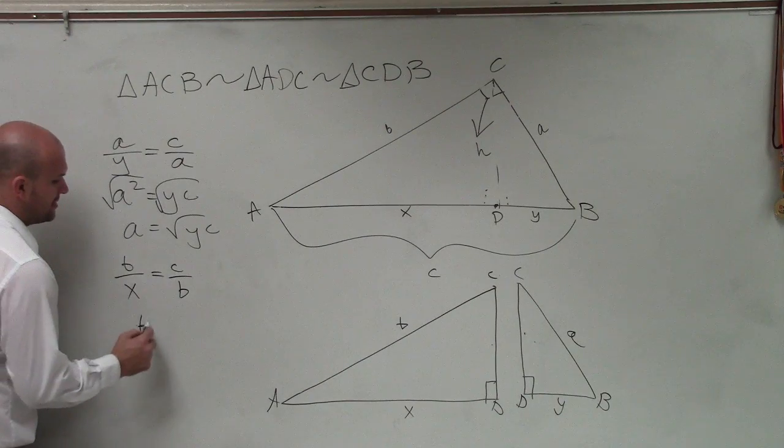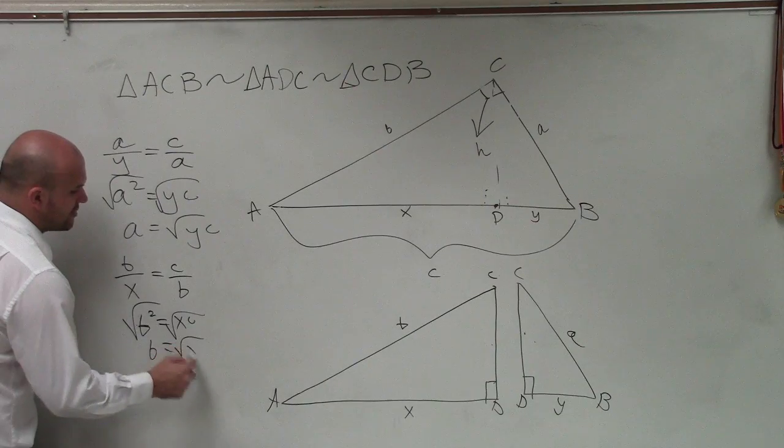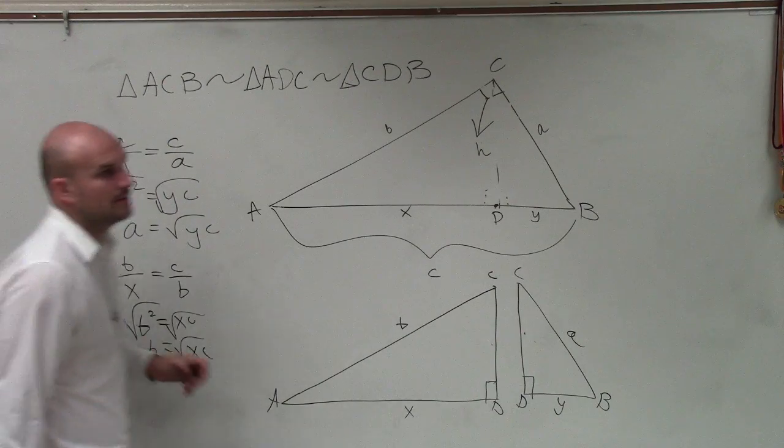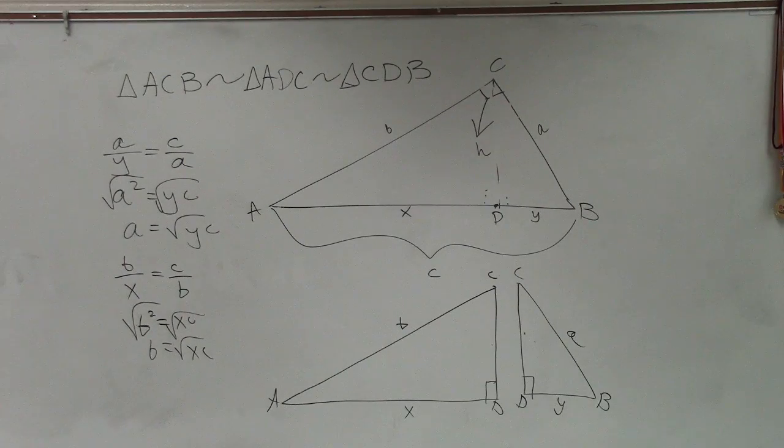Again, cross multiply. B squared equals x times c. Square root, square root. B equals the square root of xc. And there you go, ladies and gentlemen. That's it. Got it?